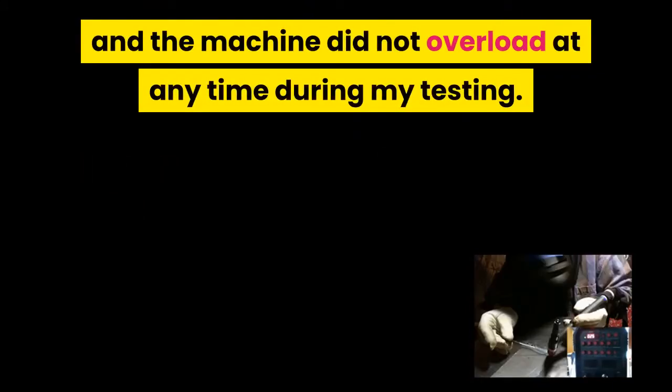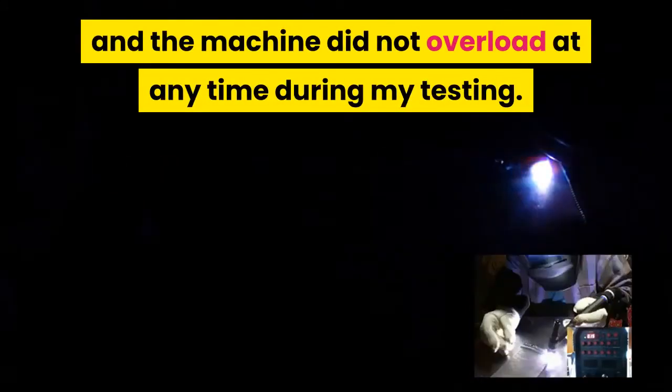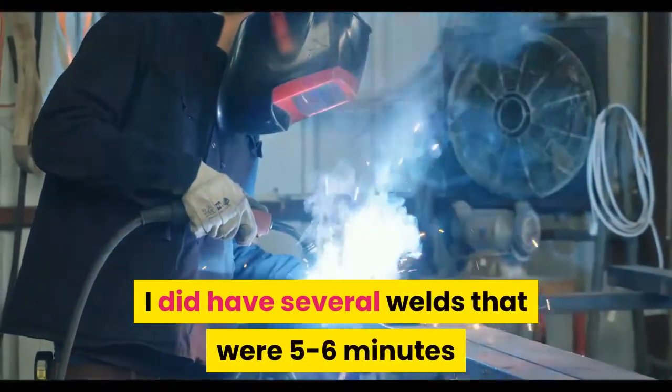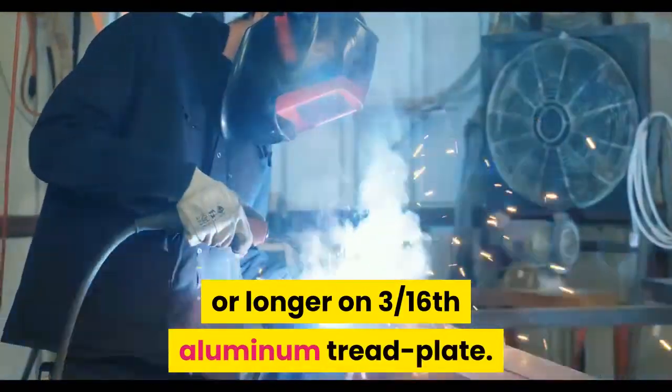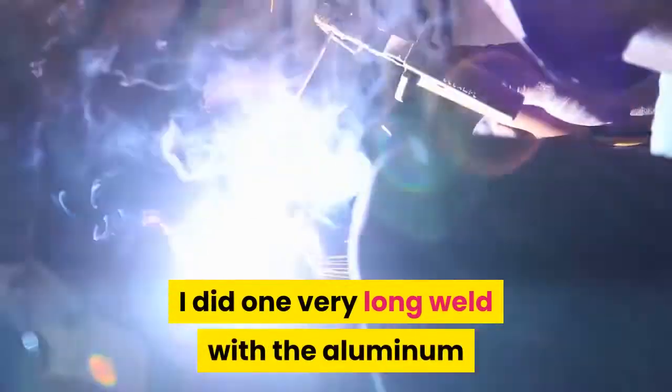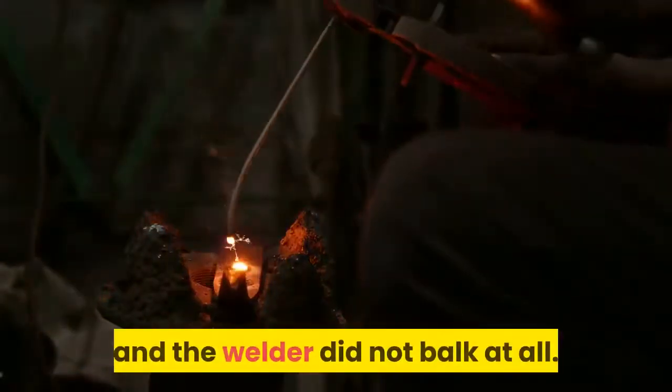The duty cycle is 40% and the machine did not overload at any time during my testing. I did have several welds that were 5 to 6 minutes or longer on 3/16ths aluminum tread plate. I did one very long weld with the aluminum and the welder did not balk at all.